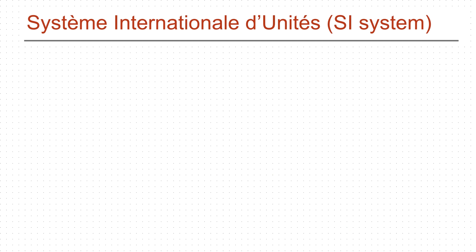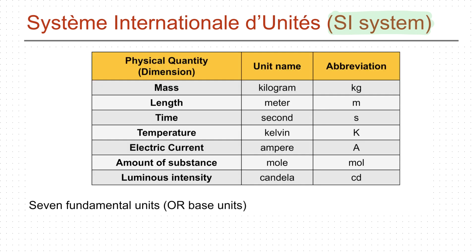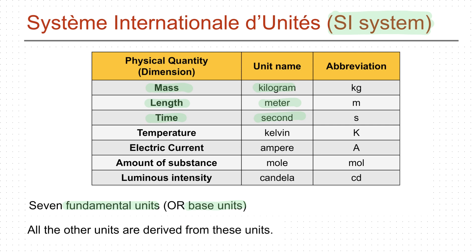The most widely used system of units by scientists across the world is called the International System of Units, abbreviated as the SI system. There are seven fundamental or base SI units. The following table shows various fundamental physical quantities and their corresponding SI units — for example, mass is measured in kilograms, length in meters, time in seconds. All other units are derived from these fundamental units.